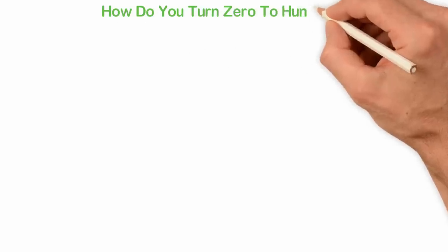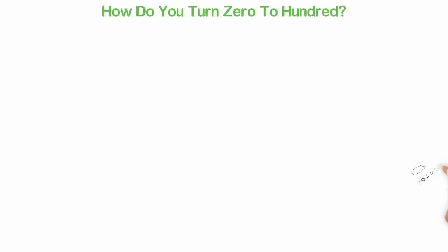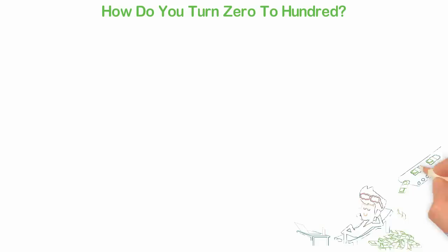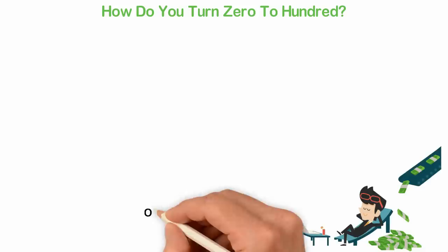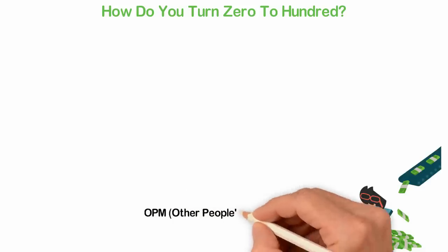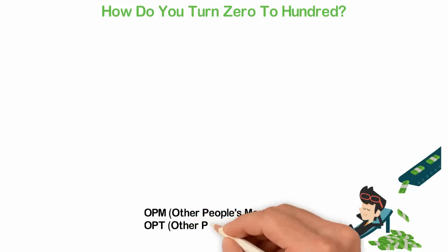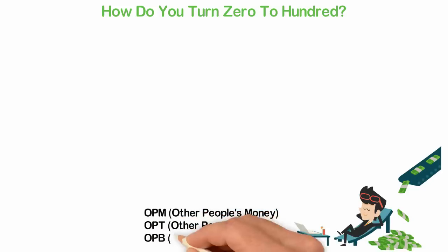How do you turn 0 to 100? My life was drastically changed around the year 2007-2008. What happened was that for the first time in my life, I came across the concept of OPM, other people's money. I later understood OPT, other people's time and OPB, other people's brains.